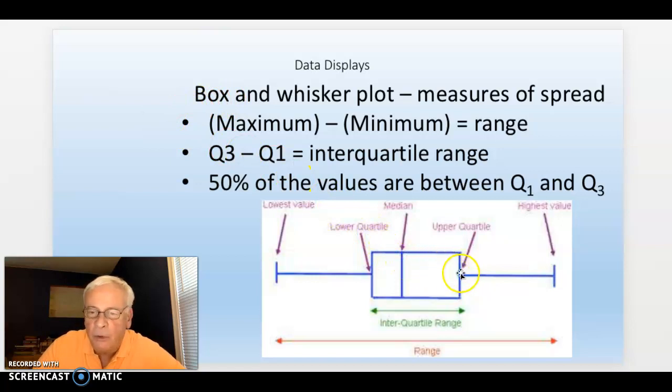And it gives us a very important measure of spread: this interquartile range. Inside here, where is half the data? Inside here, near the middle. That's Q3 minus Q1. It gives you a value there.